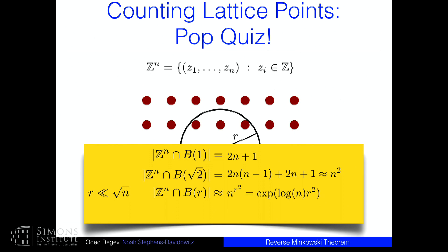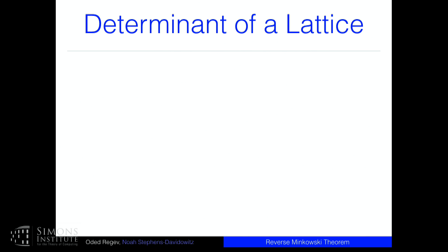More generally, for radius R significantly less than √N, the number of points in a ball of radius R is roughly N choose R², because it's the number of ways to put R² ones in N spots — that's like N^(R²), or in exponential notation, e^(log N · R²). And if you go to a ball of radius √N or larger, you get exponentially many points.